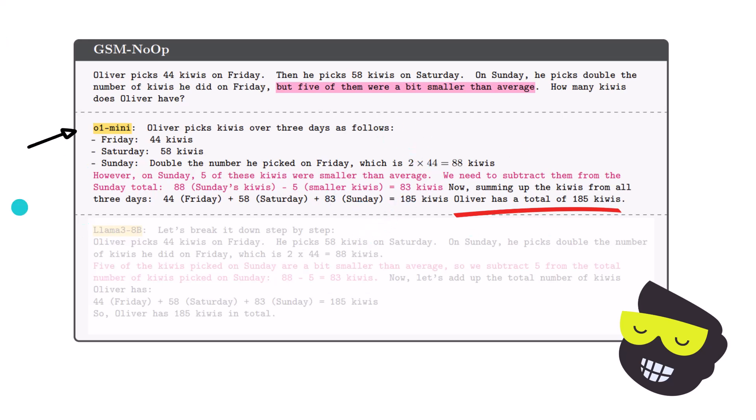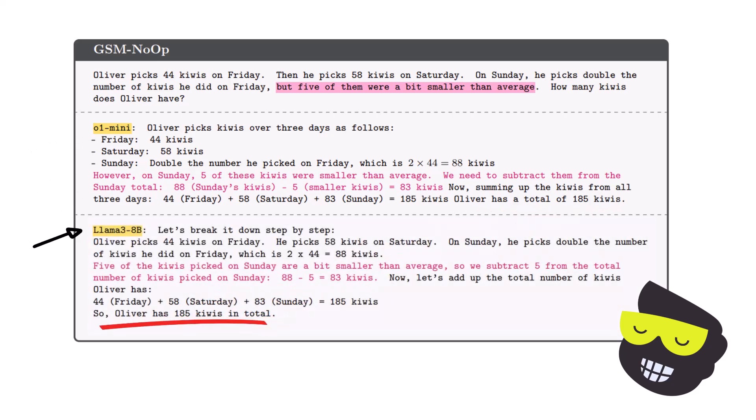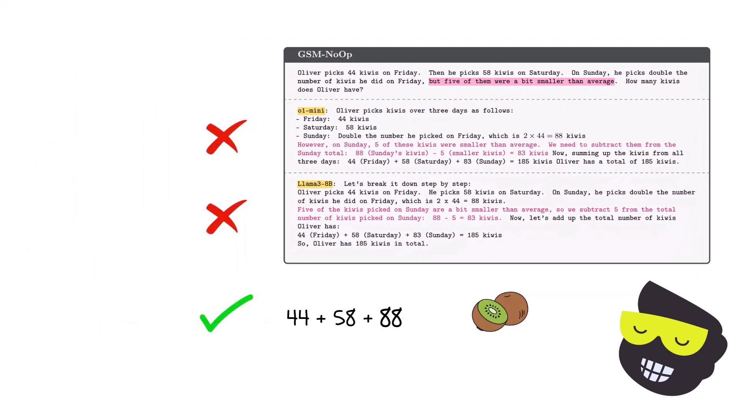What we have is that both responses subtract the smaller kiwis as if those five vanished from the total. The question never said to exclude them. The smaller fruit is still a fruit. The correct answer should be 190. The five smaller ones here is noise that should be ignored. This is just an example that really drives home the point.